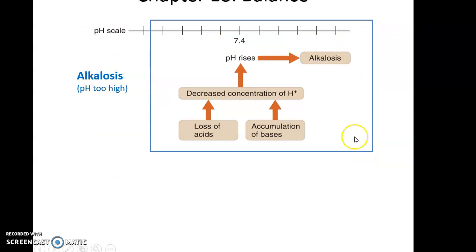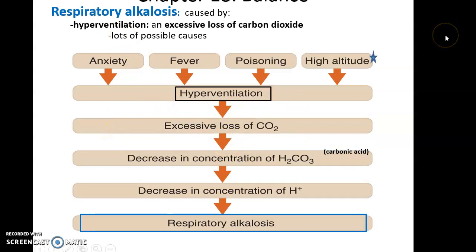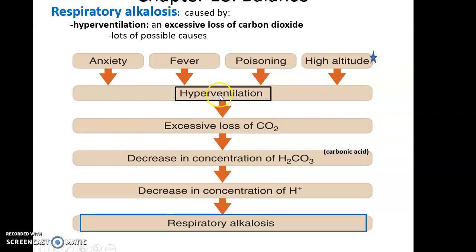Alkalosis occurs when the pH is too high — when you're losing hydrogen ions, caused by loss of acids or accumulation of bases, leading to blood pH rising. Respiratory alkalosis can be caused by hyperventilating — breathing too rapidly — causing an excessive loss of carbon dioxide. Hyperventilation can be triggered by anxiety, stress, fever, poisoning, or even high altitude, where someone breathing fast to compensate for low oxygen inadvertently loses too much carbon dioxide, decreasing carbonic acid and hydrogen ion concentration, raising pH.